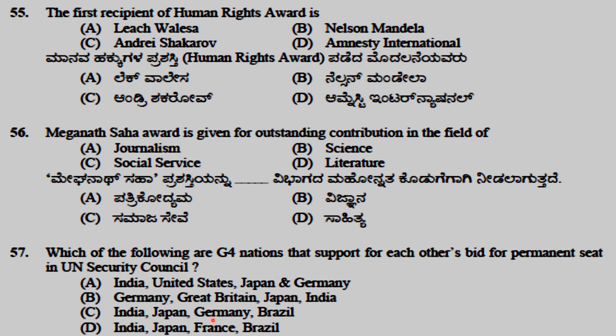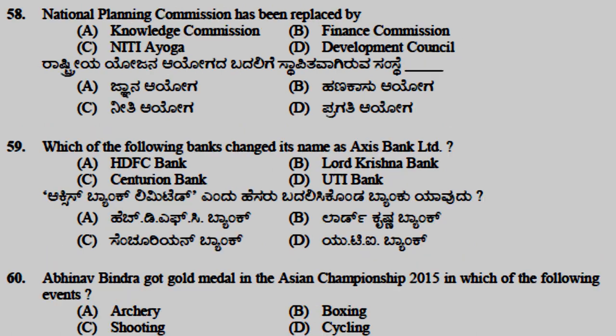The G4 nations that support each other's bids for permanent seats in the UN Security Council are India, Japan, Germany, and Brazil. The National Planning Commission has been replaced by NITI Aayog.